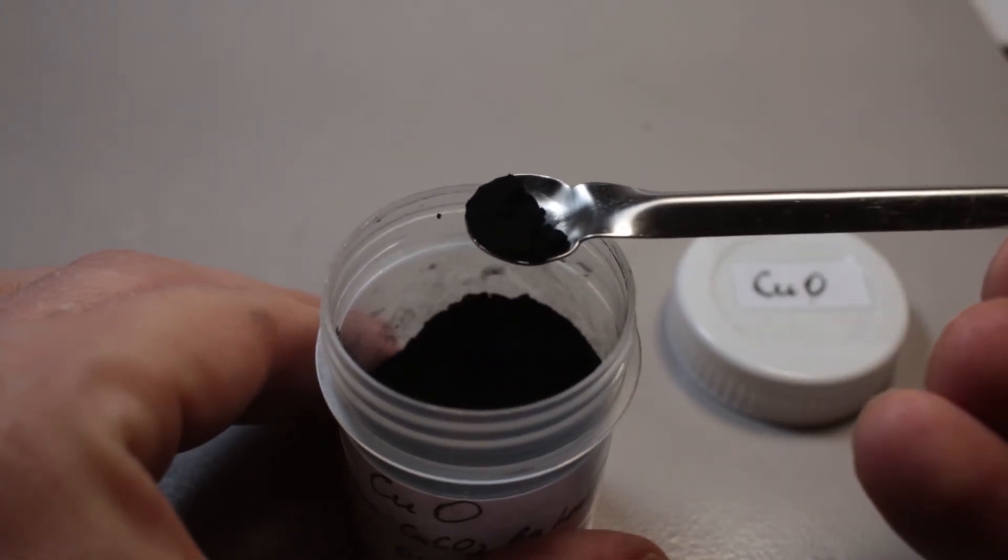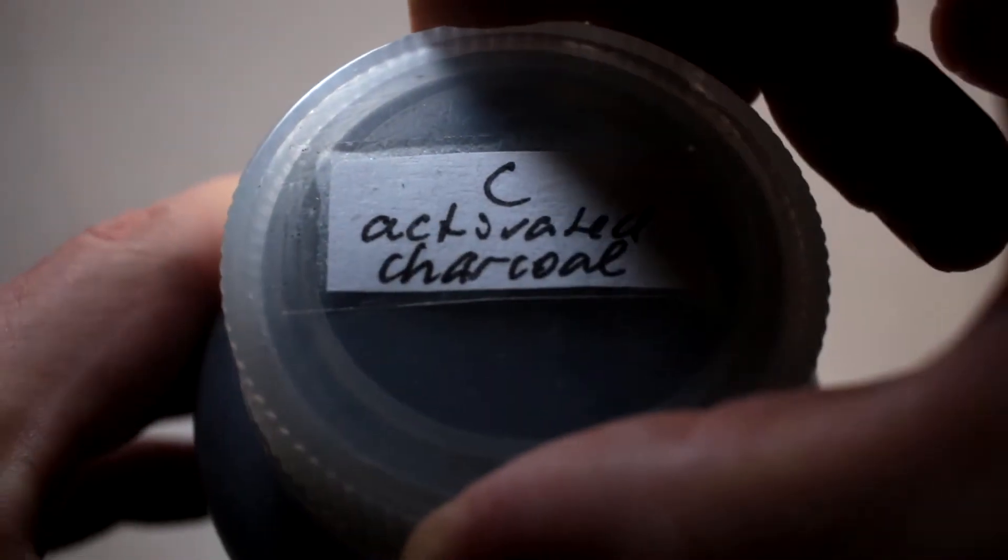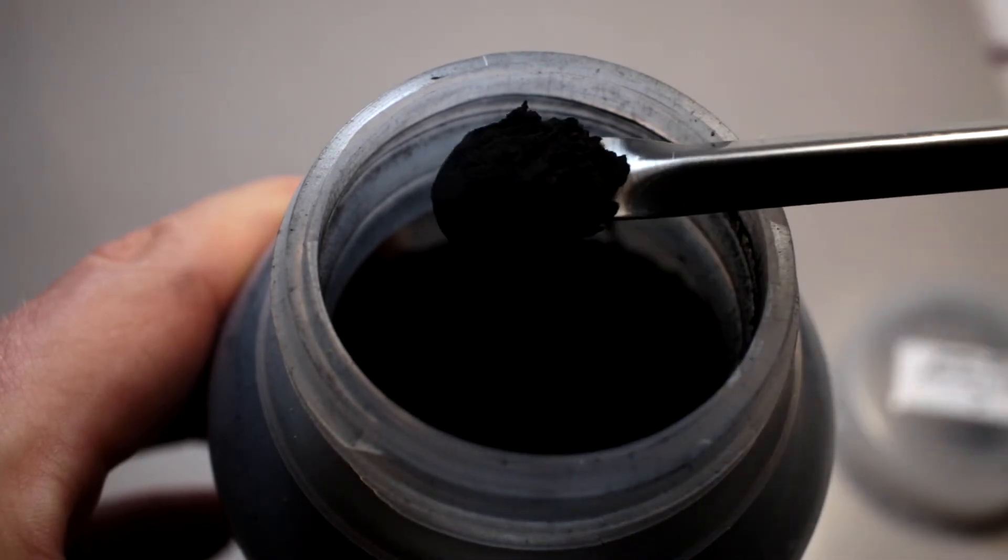Here's how the copper oxide looks like, quite like charcoal powder. Simply, copper oxide powder is much more dense.